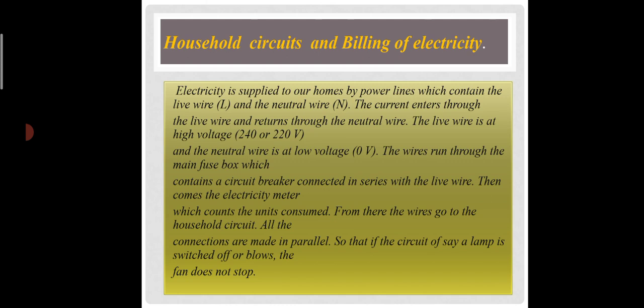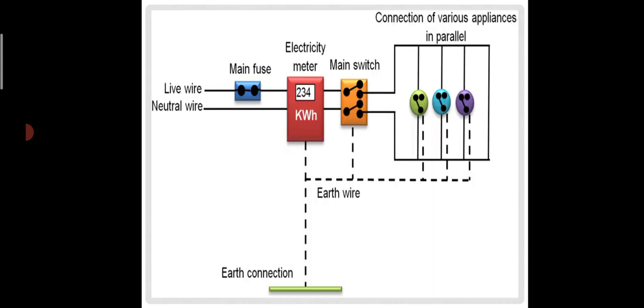From there, the wires go to the household circuit. All the connections are made in parallel, so that if the circuit of, say, a lamp is switched off or blows, the fan does not stop. We can discuss this through the diagram.